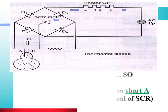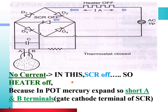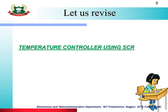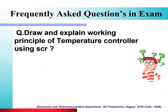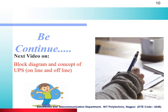When no current flows through the SCR, the SCR remains off and the heater remains off, because terminals A and B inside the mercury tube are shorted, and this shorts the gate-cathode terminal of the SCR, keeping it off. In board exams, the question asked is: 'Try and explain the working principle of temperature controller using SCR.' Thank you students.